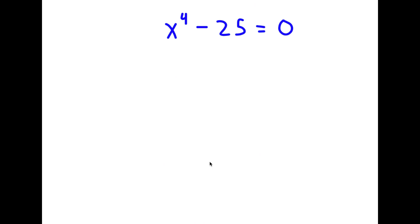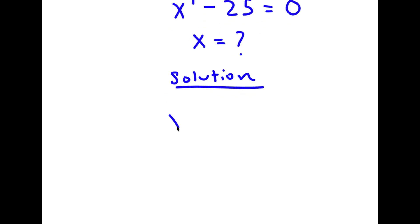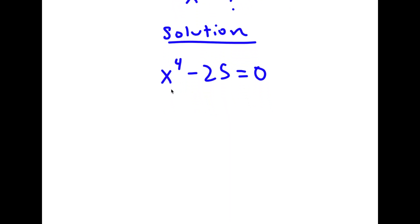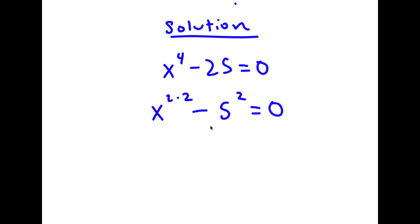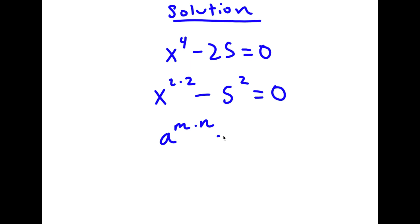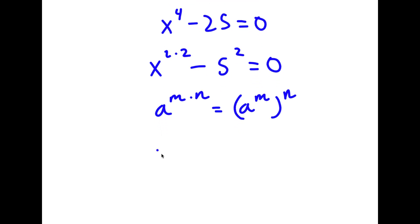In this problem, I have x to the power of 4 minus 25 is equal to 0, and I'm going to find the value of x. I'll rewrite x to the power of 4 as x squared to the power of 2, and rewrite 25 as 5 squared. Using the rule that a to the power of m times n equals a to the m to the n, I rewrite x to the 2 times 2 as x squared to the power of 2. So I have x squared to the power of 2 minus 5 squared equals 0.